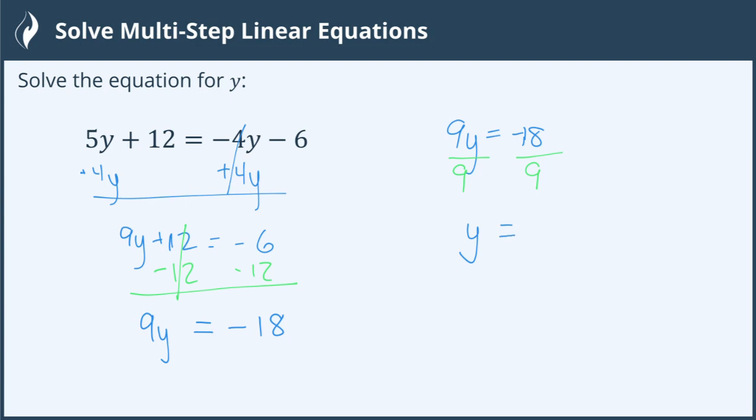Even if it doesn't work out as nicely, you still leave it as a fraction form unless you're approximating, but you would simplify the fraction if you can. In this case, I can divide that and get negative 2. So my answer is y equals negative 2.